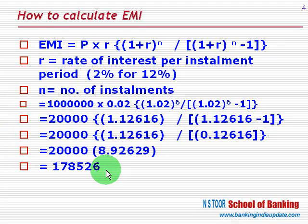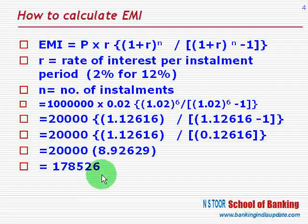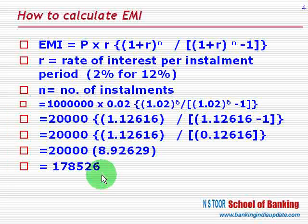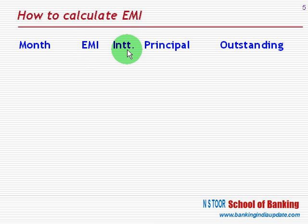We can verify this by using the table method. We shall take into consideration this amount of equated installment and calculate the detailed working. The table has columns for: month, amount of EMI, interest due till that period, amount of principal repaid through that monthly installment, and outstanding balance of the loan.